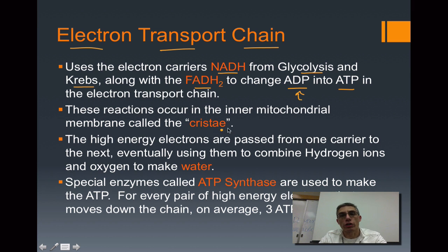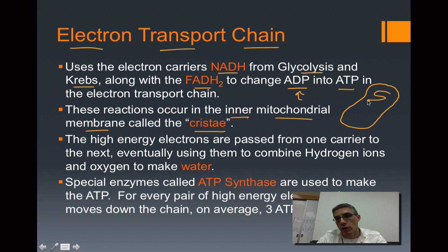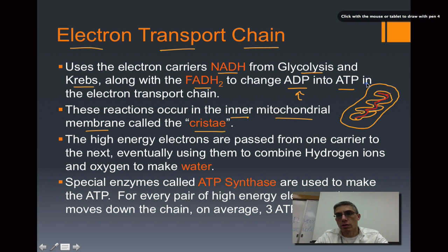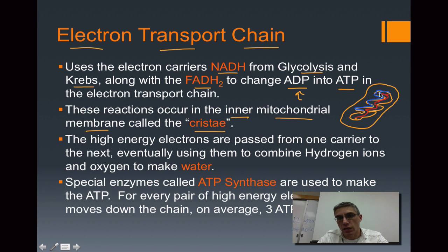These reactions occur in the inner mitochondrial membrane, sometimes referred to as the cristae. Looking at the mitochondrion diagram on the right, Krebs occurred on the inside matrix shown in red, and the electron transport chain actually occurs right on this membrane shown in blue — that's the cristae of the mitochondrion.